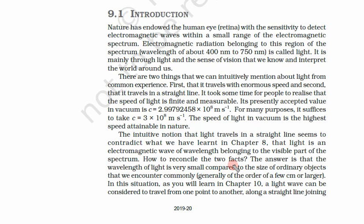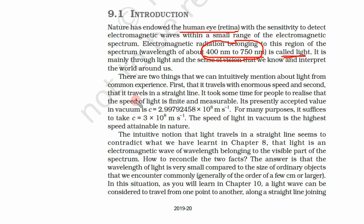After having some introduction to the geometry that we are going to use, let us start this chapter. This chapter is concerned mainly about electromagnetic radiation between 400 nanometers to 750 nanometers, and this radiation is called light. The speed of light is very high — we write this as 3 × 10⁸ meters per second.